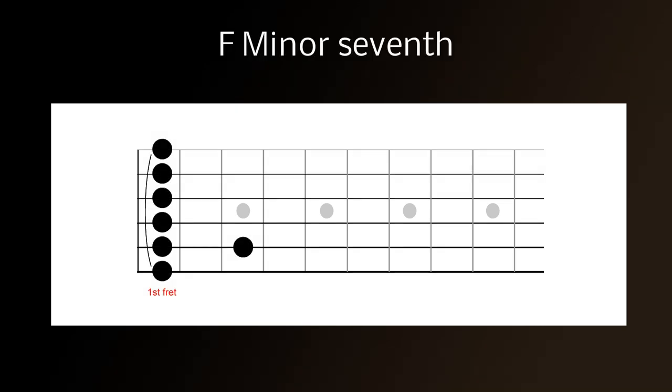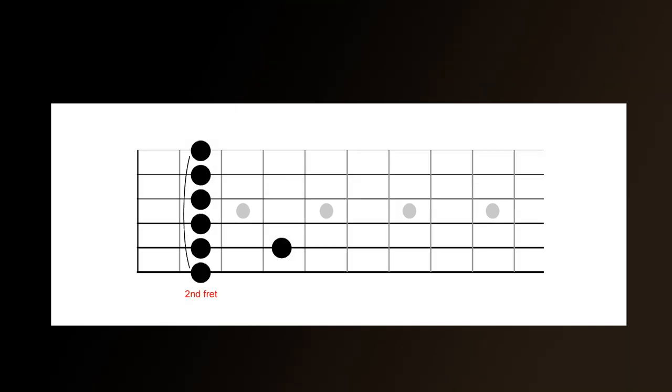And this rule doesn't stop with the majors and the minors. If you were to take, for example, an F minor seventh in the first fret and take it up by a fret to the second fret, it would be F sharp minor seventh.